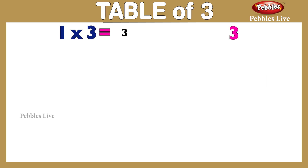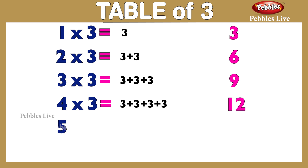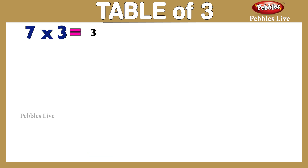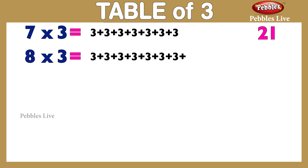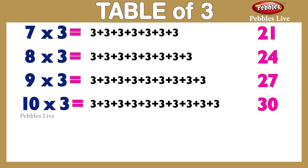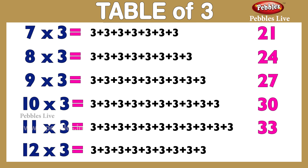Table of 3: 1 three is 3, 2 threes are 6, 3 threes are 9, 4 threes are 12, 5 threes are 15, 6 threes are 18, 7 threes are 21, 8 threes are 24, 9 threes are 27, 10 threes are 30, 11 threes are 33, 12 threes are 36.